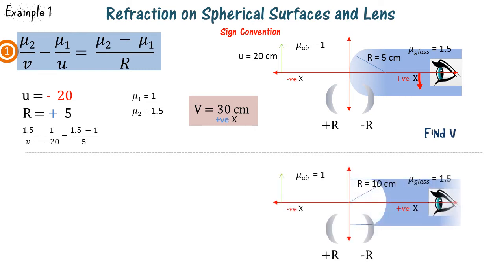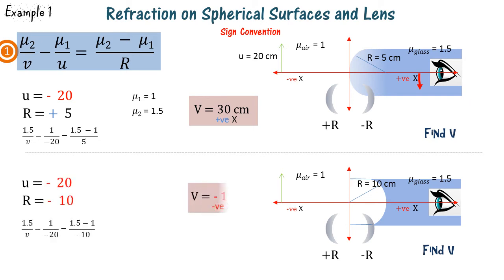In the second example, the surface is bulging inwards towards the eye, so we take R as minus 10. On substituting the values, we find v as minus 15 centimeters, which means the image is formed on the same side as the object, on the negative x-axis.